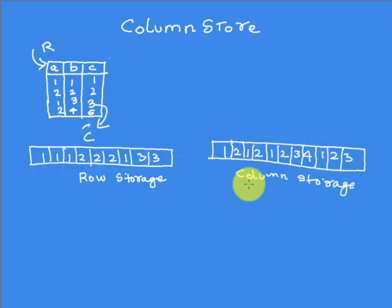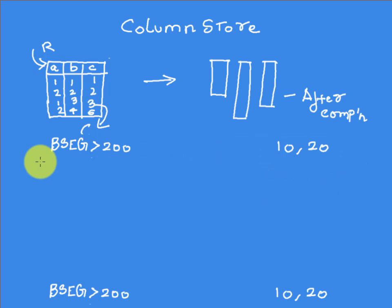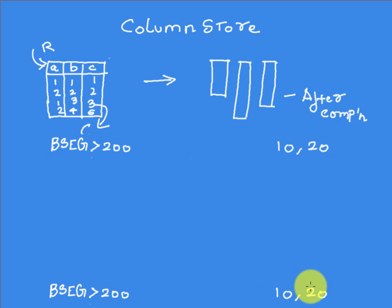Why should we do this? Because column storage supports really fast in-memory processing of operations such as aggregates, which are generally very expensive. It supports sequential memory access and massive parallel processing. Searching on a column store is much faster than searching on a row store, provided you are only selecting a set of columns. For example, the BSEC table — a very important accounting table in the SAP ERP system — has more than 200 columns, but most of the time you don't use more than 10 to 20 of them. So converting a table like BSEC to a column store makes it much faster to process and run queries.